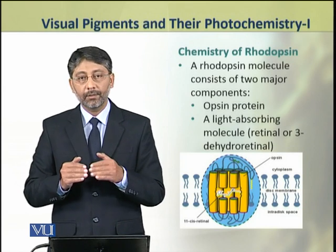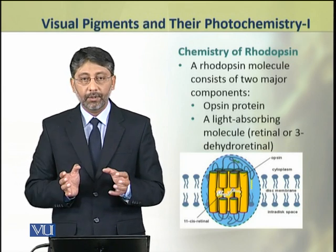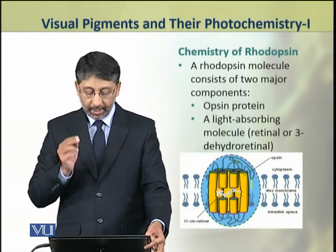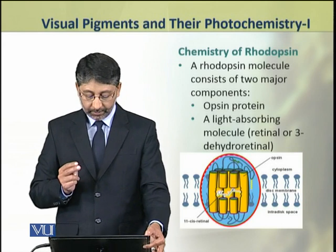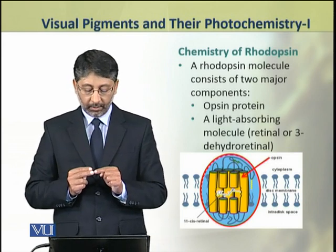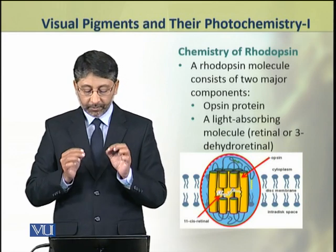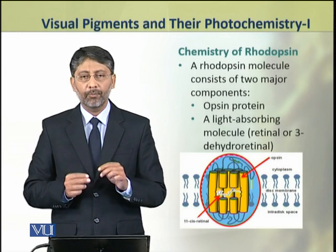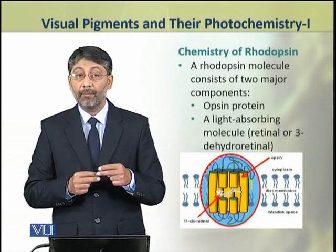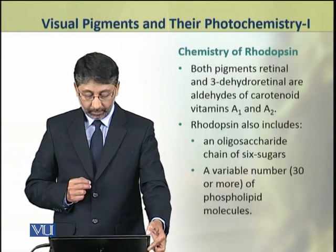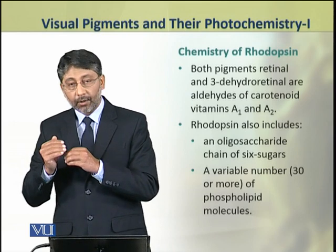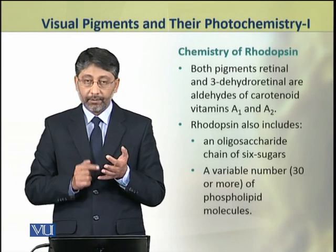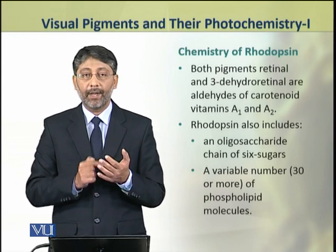Now we shall see the chemistry of rhodopsin. A rhodopsin molecule consists of two major components: one is the opsin protein, and the second is the light-absorbing molecule, which may be retinol or 3-dehydroretinol. Both these are carotenoid pigments derived from vitamin A. Retinol is derived from vitamin A1, while 3-dehydroretinol is derived from vitamin A2.